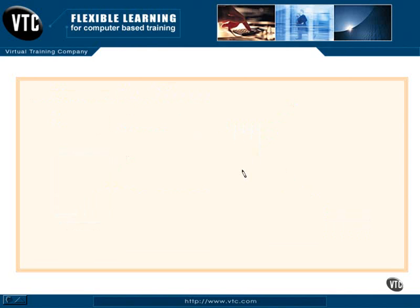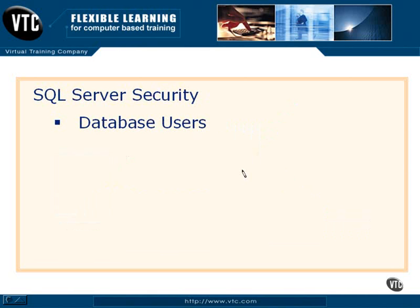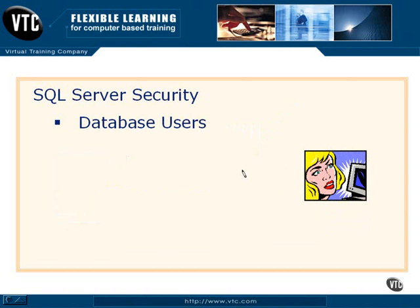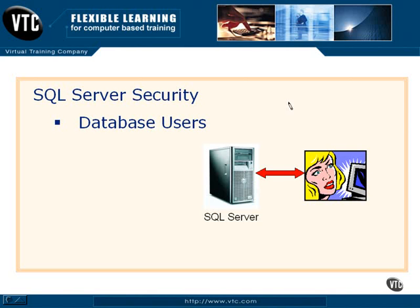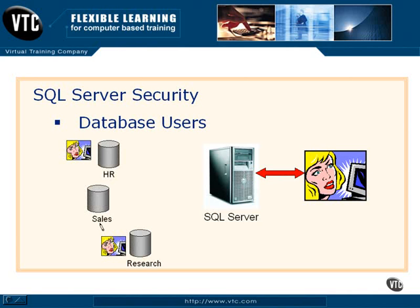Let's go to the next step, which fits in with authentication modes and has to do with database users — because there are really two steps to security in SQL Server. Number one, we've got to get you onto the SQL Server box, and number two, we've got to get you into a database. Here's our user, already connected to SQL Server — she connected using either Windows authentication or SQL Server login. Either way, she now has a connection. On this particular SQL Server, there are three databases: HR (human resources), Sales, and Research. This user's login account has been assigned as a database user in HR and Research, but not in Sales. That means she can go into the HR and Research databases and only do the things she's been granted permission on — certain tables, stored procedures, and so forth. That's how SQL Server security works at the 10,000-foot view.